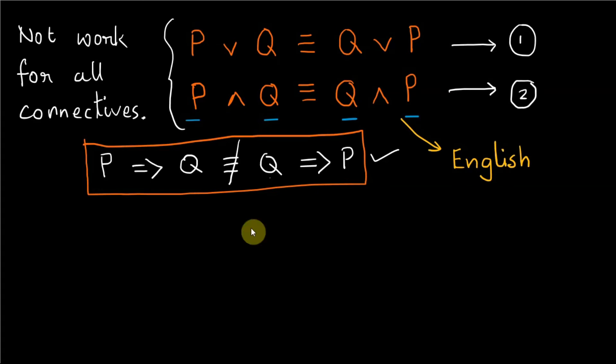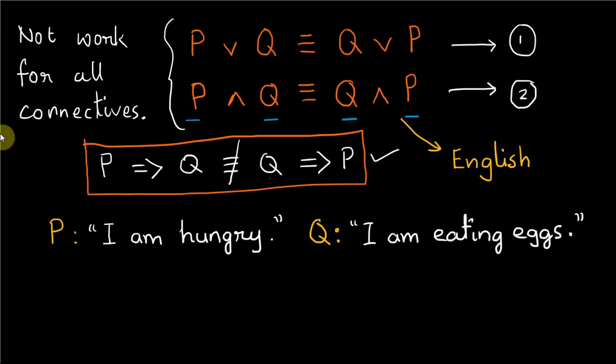If we translate the commutative laws into English sentences, it will probably make more sense. Therefore let P be a statement I am hungry and Q be the statement I am eating eggs.